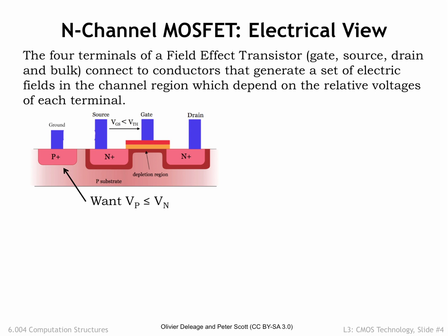When the MOSFET is manufactured, it's designed to have a particular threshold voltage, VTH, which tells us when the switch goes from non-conducting, or open, to conducting, or closed. For the N-channel MOSFET shown here, we'd expect VTH to be around 0.5V in a modern process.